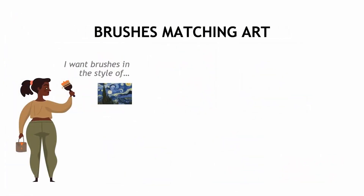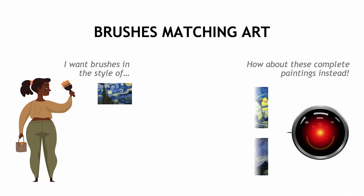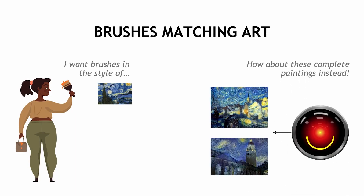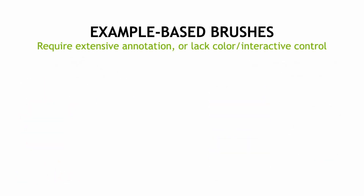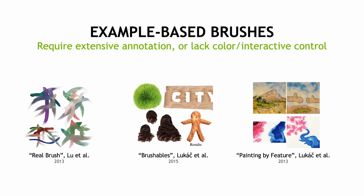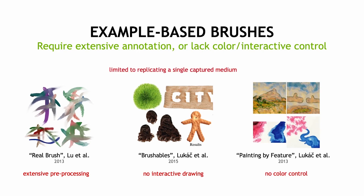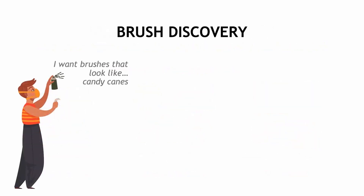Curated lists of brushes also make it difficult to support applications such as matching a brush that can be used to paint in a specific style. Instead, we have well-developed technology that can do this painting for us, cutting the artist out of the loop. While there exist example-based approaches for modeling different media, they either require extensive pre-processing of every input style, or don't support interactive drawing or color control. In general, each of these methods requires capturing a specific medium that needs to be modeled. Other applications not possible today include finding tools using a text query.